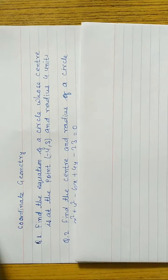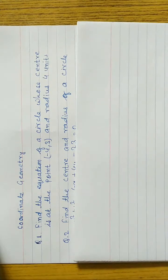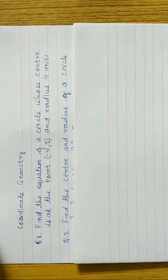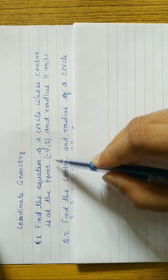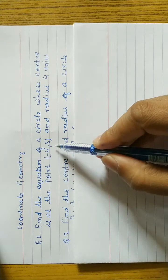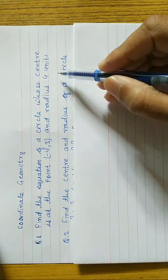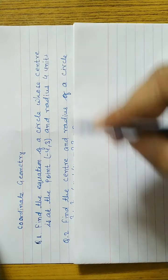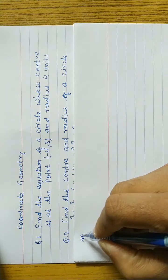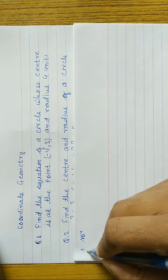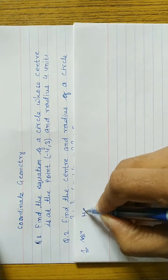Find the equation of a circle. We need to find out the equation of a circle whose center is at point (-4, 3) and radius is 4 units. Look at the center and the radius 4 units. Let's start question number 1. Center of a circle: